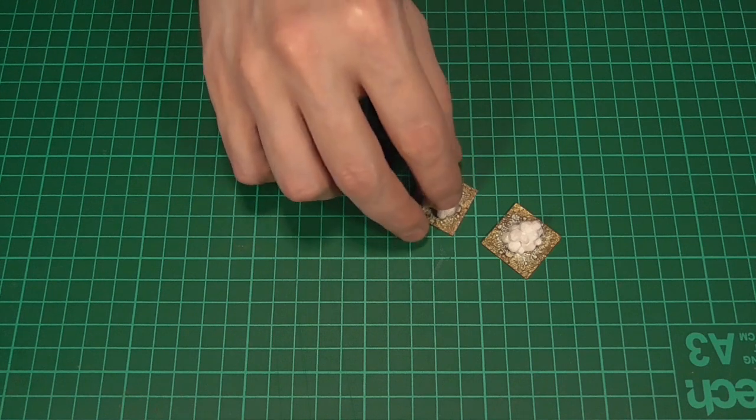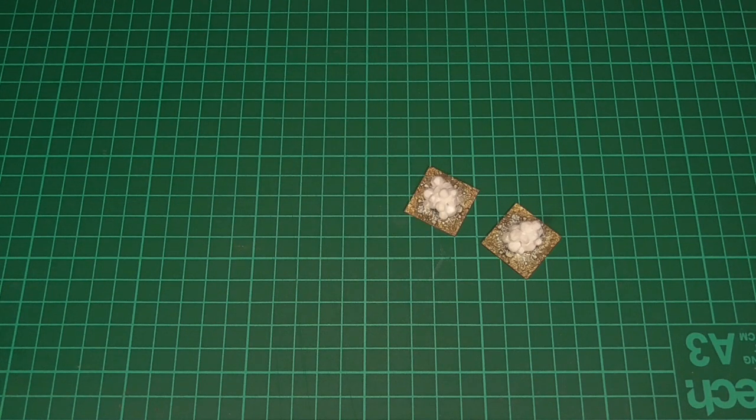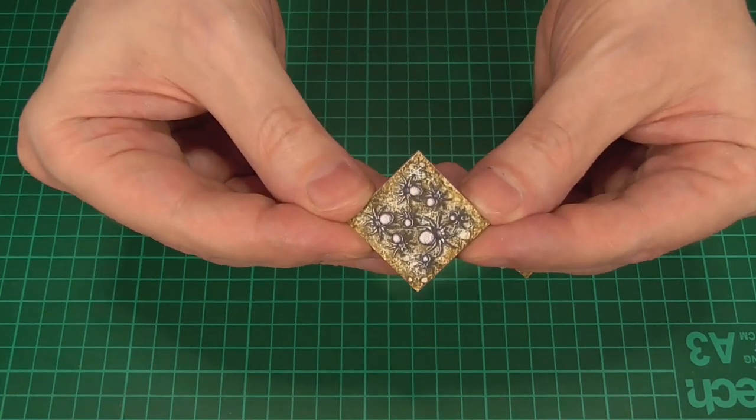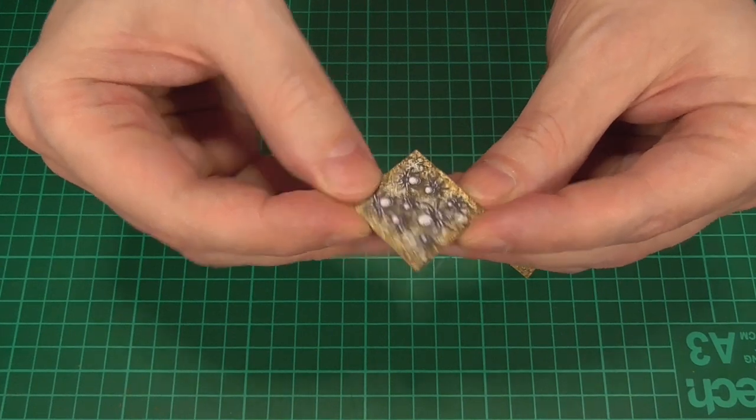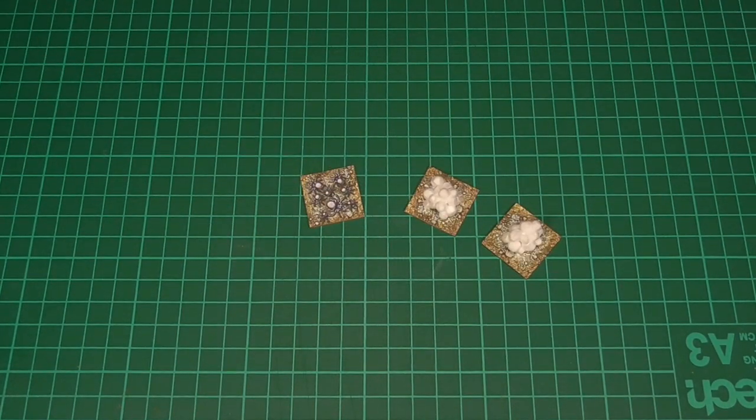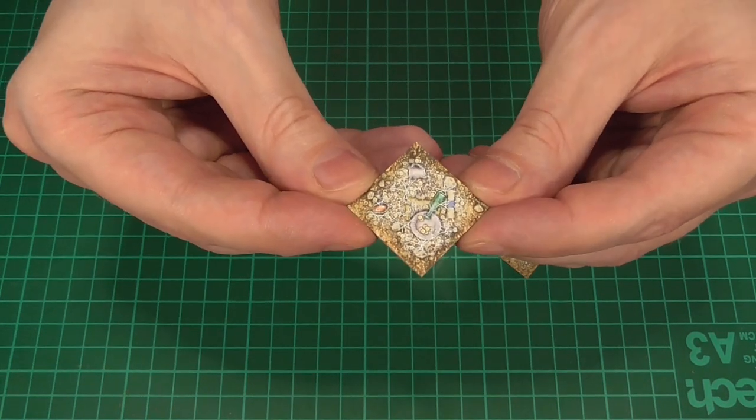Anyway, that's pretty much it for the spider eggs. Though I have also provided a couple of spider swarm tokens that you might like to use if someone decides to disturb these eggs. Plus, since I had some room on the page, I've also included a cobweb covered treasure token as well.